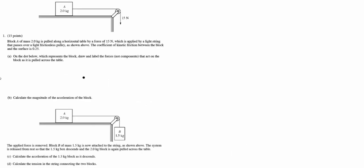We're dealing with question number one from the 2012 AP Physics B exam. This is a primary mechanics problem. We have a block, a big block of mass 2 kilograms, pulled along a horizontal table by a force of 15 Newtons, which is applied by pulling in a light string over a pulley. The coefficient of kinetic friction between the block and the surface is given.